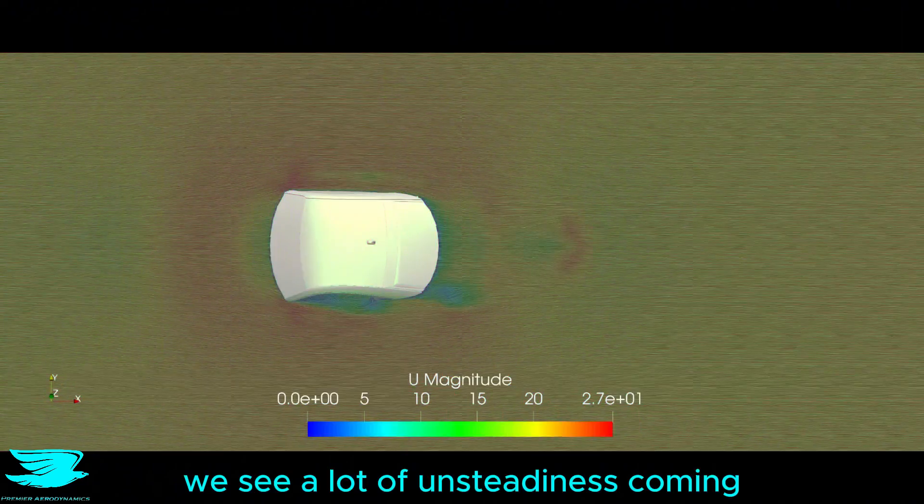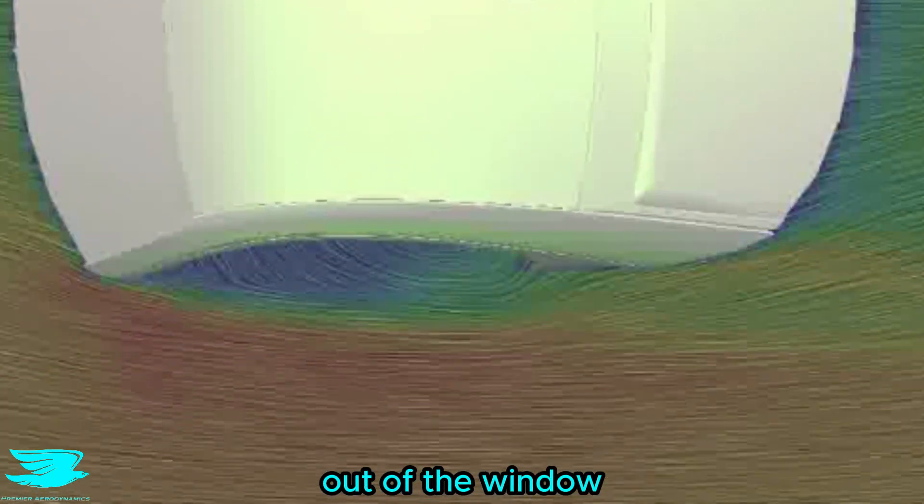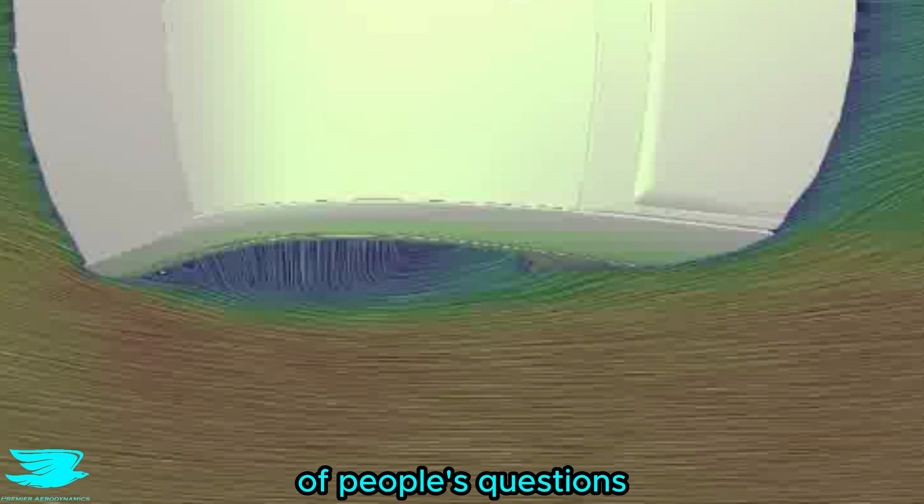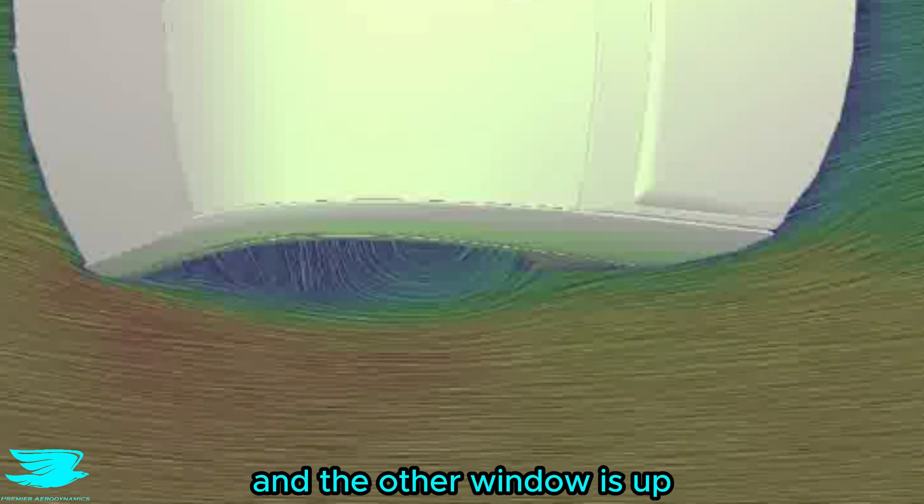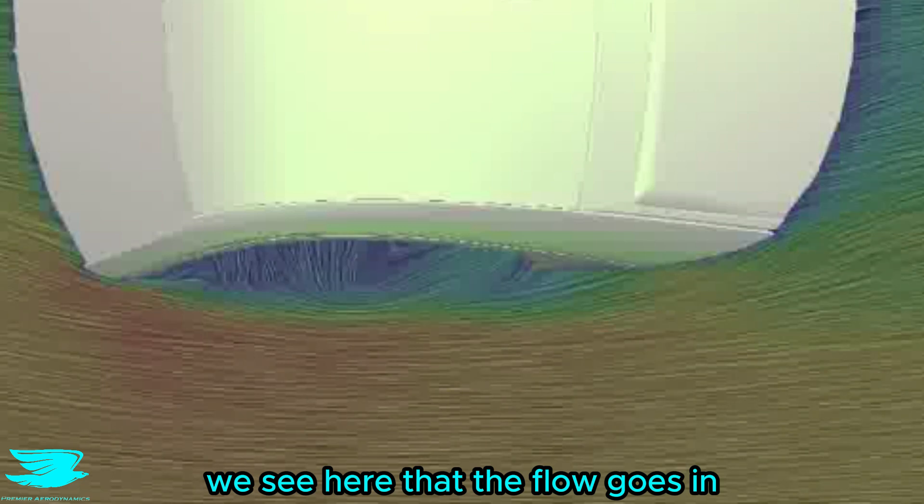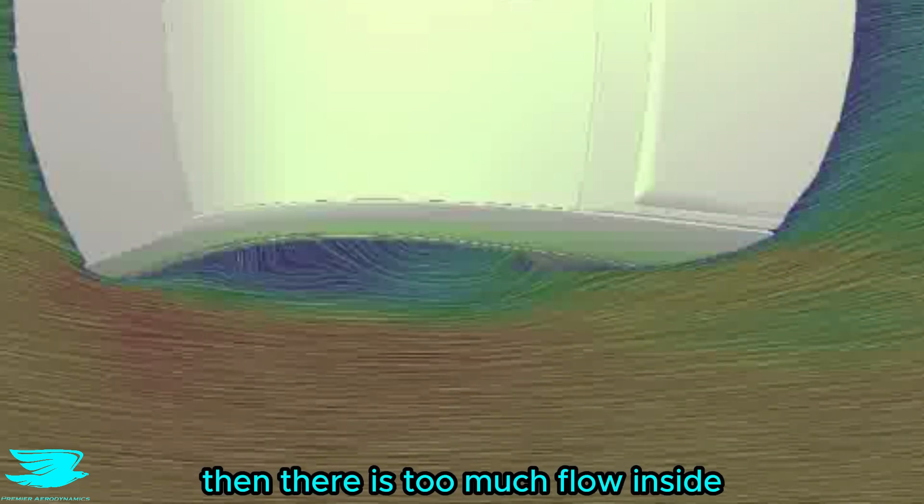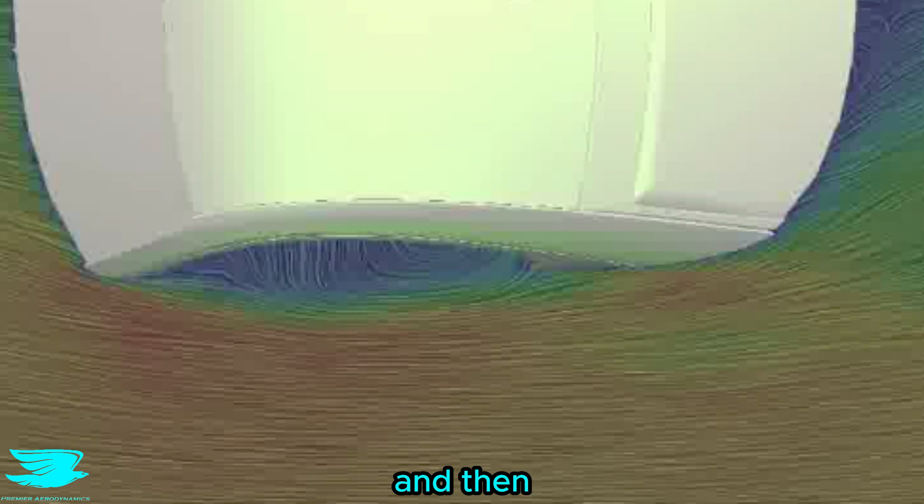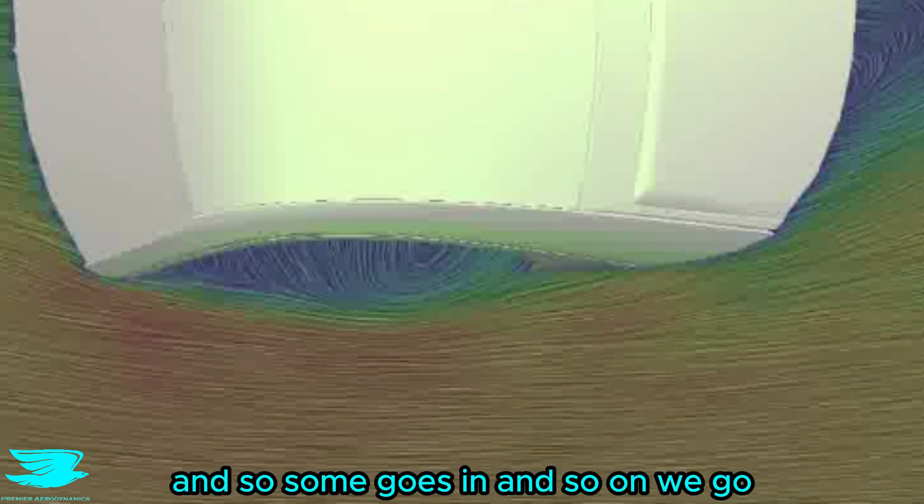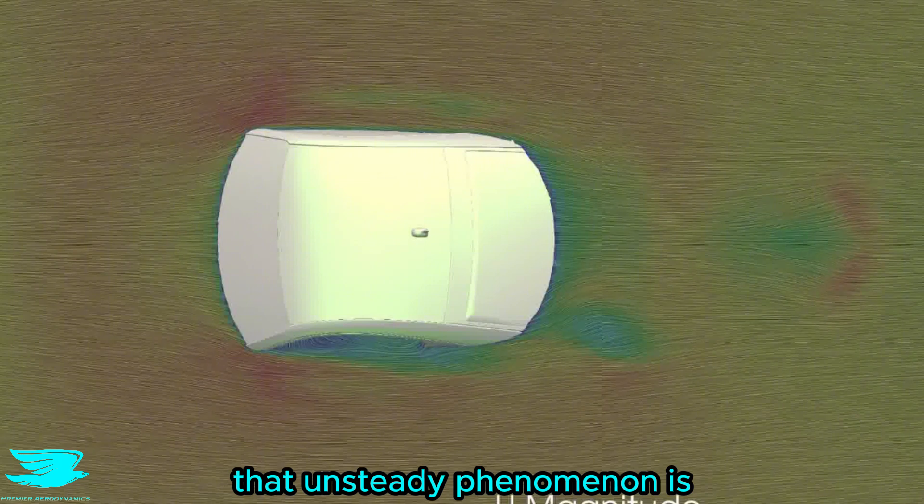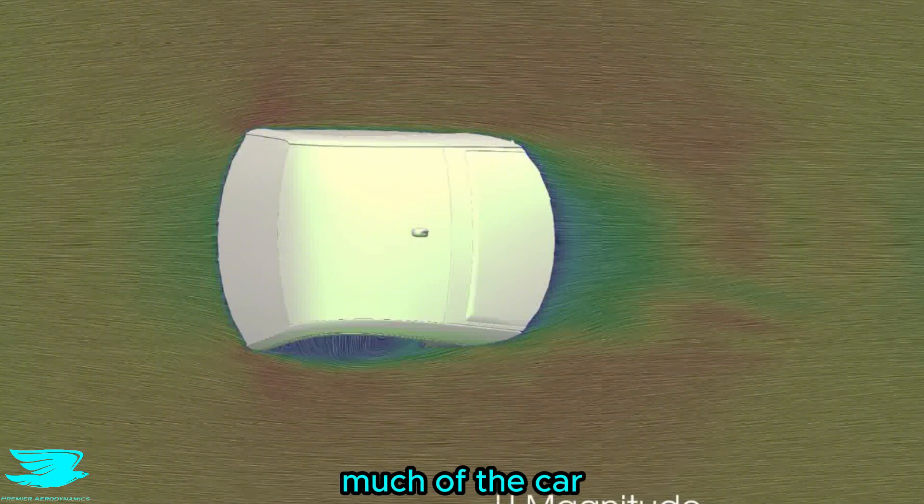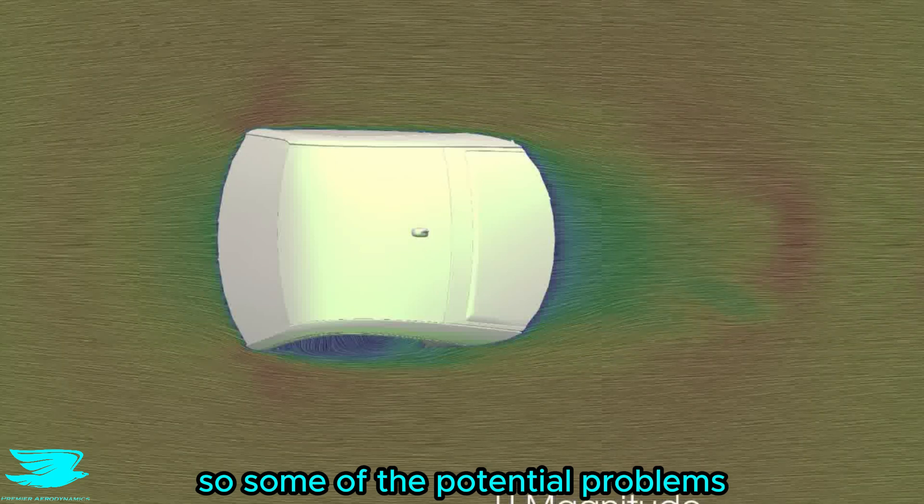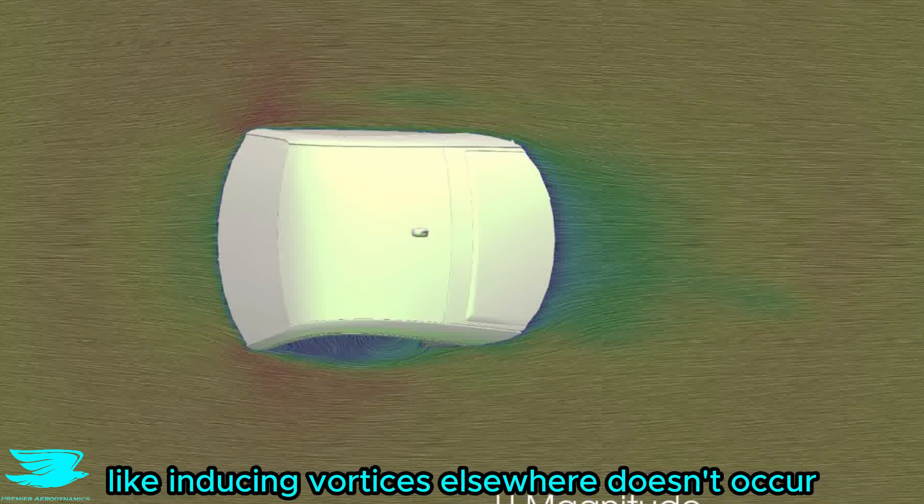From on top, we see a lot of unsteadiness coming out of the window. And this actually answers a lot of people's questions about why there is buffeting when one window is open and the other window is up. We see here that the flow goes in, then there is too much flow inside, so some pops out, and then there is some room now for more flow to cram in, and so some goes in, and so on we go. That unsteady phenomenon is clearly affecting the wake, but fortunately, it's not around much of the car, so some of the potential problems, like inducing vortices elsewhere, doesn't occur.